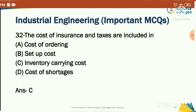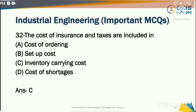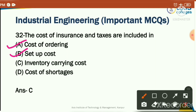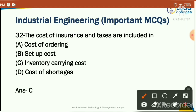The cost of insurance and taxes are included in which inventory cost category? Options: cost of ordering, setup cost, inventory carrying cost, or cost of shortages. Remember that option C is the correct answer: inventory carrying cost includes the cost of insurance and taxes.